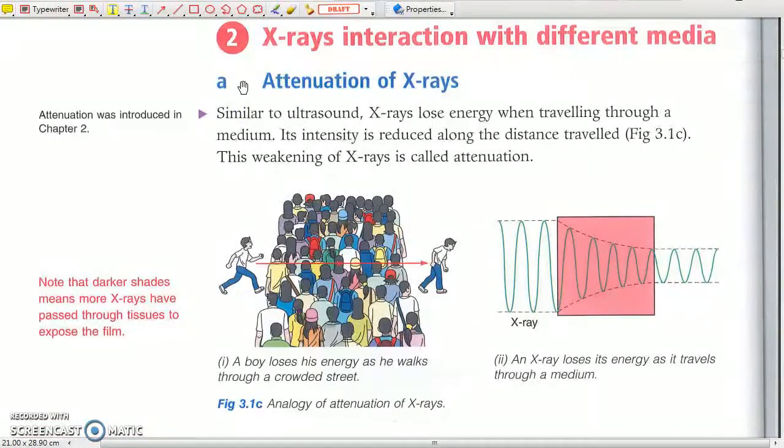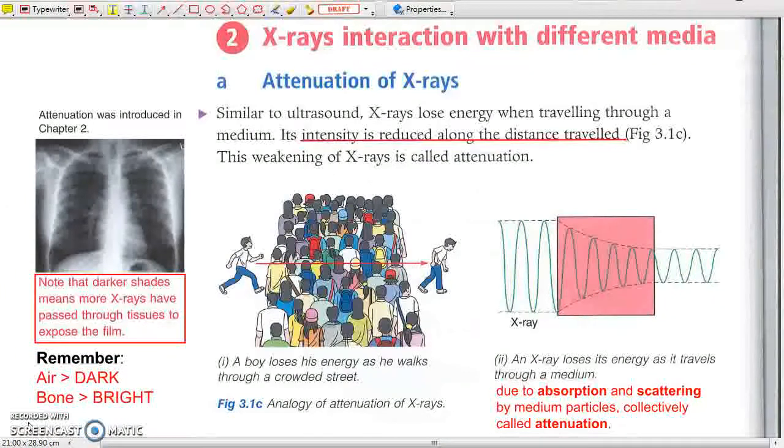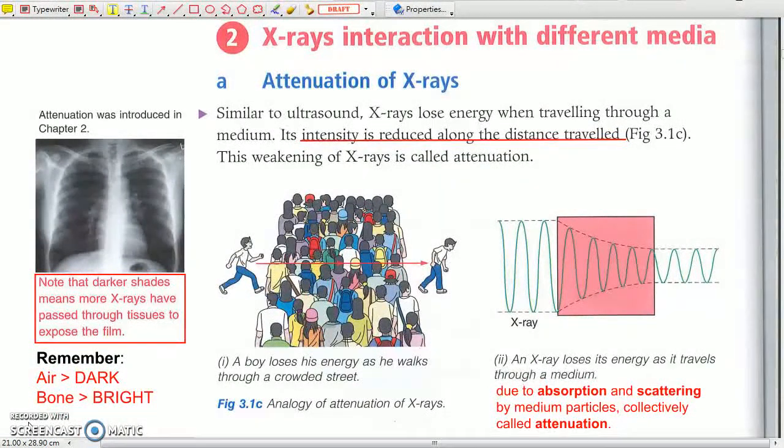a) Attenuation of X-rays. The decrease in wave intensity as the wave energy is scattered or absorbed by the medium particles is called attenuation. Due to attenuation, different tissues appear differently in an X-ray film.